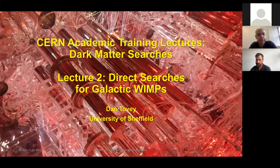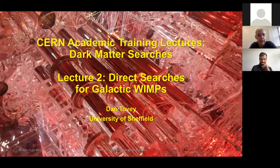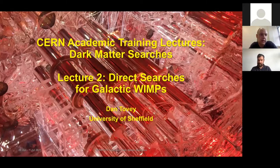Yesterday, we were looking at the motivation behind searches for dark matter — the cosmological and astrophysical arguments for why dark matter must exist. We also saw how we can go about searching for it, looked at a few models, in particular the SUSY WIMP models, defined weakly interacting massive particles or WIMPs, and finished off looking at indirect searches for WIMP dark matter, which involves looking for annihilation or decay of WIMP dark matter particles in astrophysical bodies.